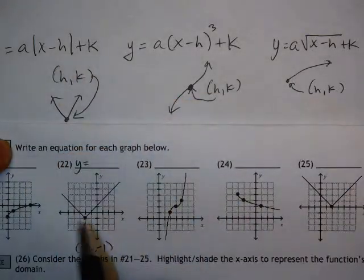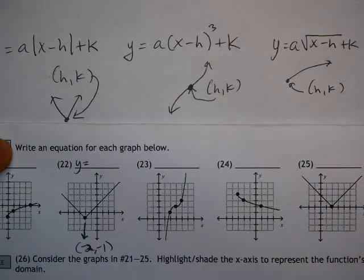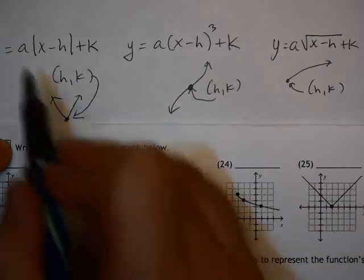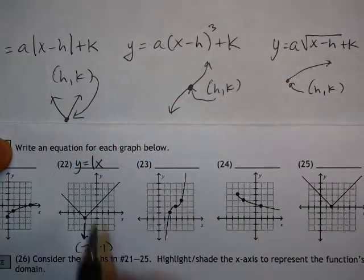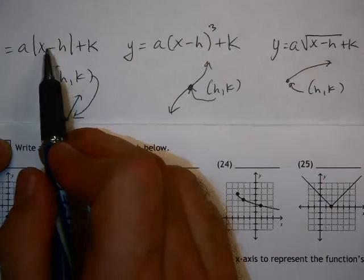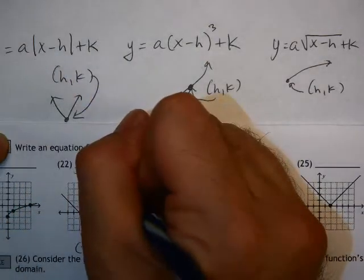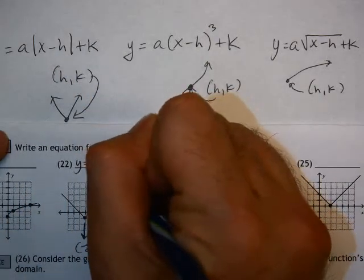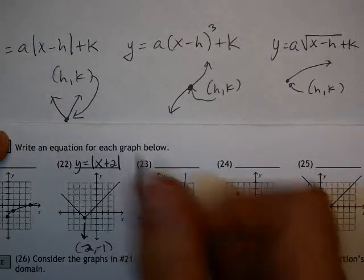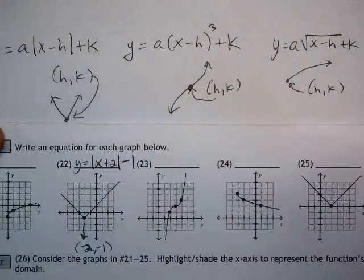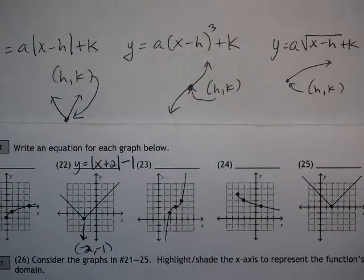So when I'm plugging into this, I'm plugging in negative 2 for this h value and negative 1 for that k value. y equals. Now it doesn't get any wider than the original graph, and it doesn't flip upside down, so the a in front is just going to be a positive 1. And when I plug negative 2 in here, negative and negative cancel. Remember, anything that goes inside these symbols changes signs, so it becomes x plus 2 inside of our absolute value symbol. And then the negative 1, the minus 1, goes into this k value, which makes it minus 1 after the absolute value symbol. So there's our equation for number 22.